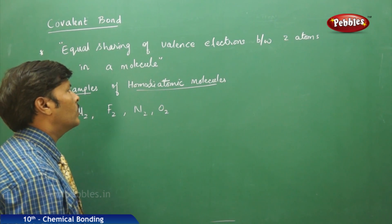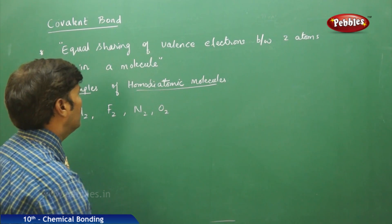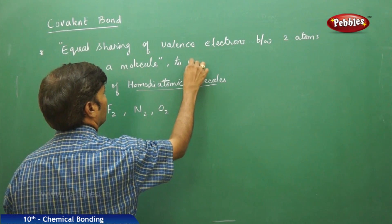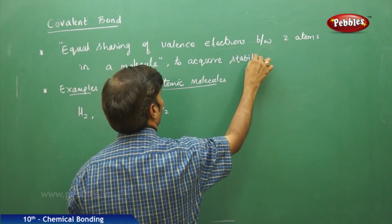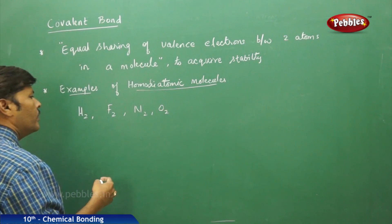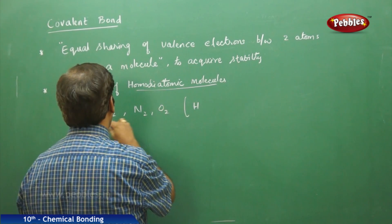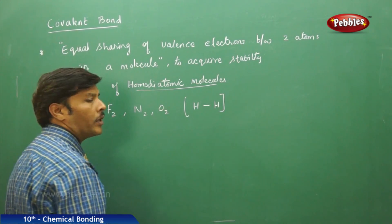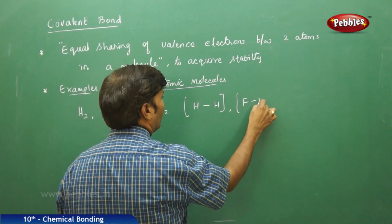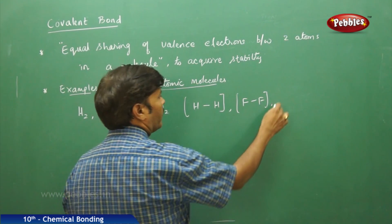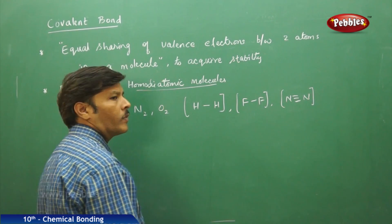The equal sharing of valence electrons between two atoms in a molecule is done to finally acquire stability. In hydrogen molecule, between two hydrogen atoms, you find a single covalent bond. In fluorine, you also find a single covalent bond. In nitrogen, you find three covalent bonds, so it is a triple bonded molecule.